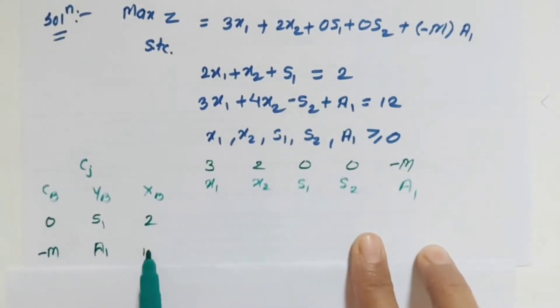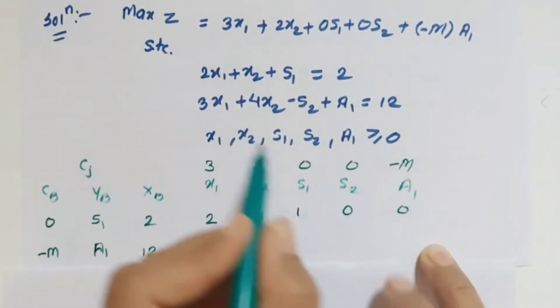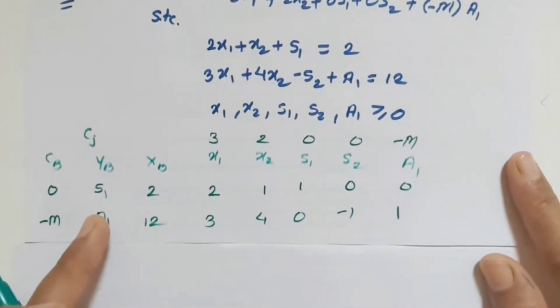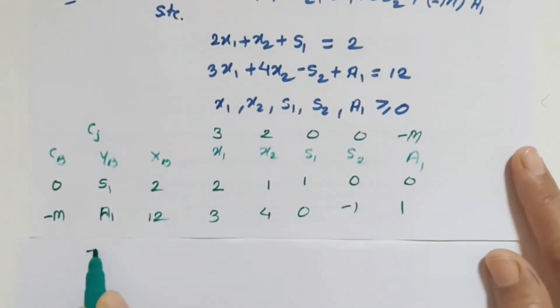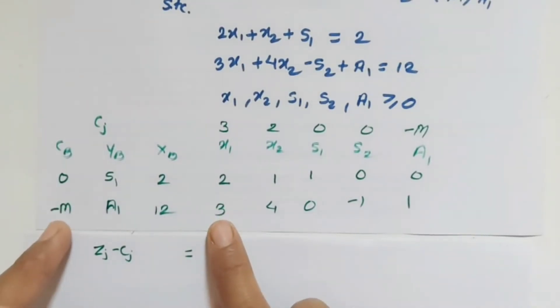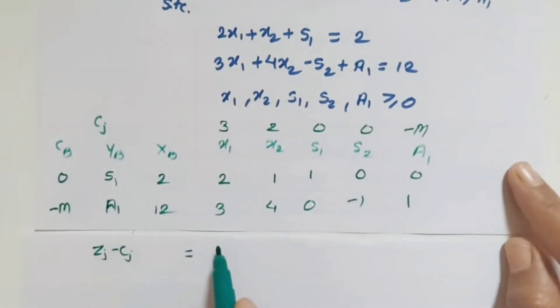It is 2, 12. Then x1, x2, s1, s2, a1 - what are the coefficients of variables? From first equation it is 2, 1, 1, 0, 0. From second equation 3, 4, 0, minus 1, 1. Now check for zj minus cj. Find out zj minus cj directly. Here zj means minus 3m minus 4m, minus of cj. So here it is minus 3m minus 3, then minus 4m minus 2.